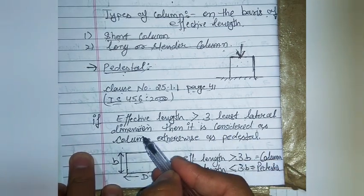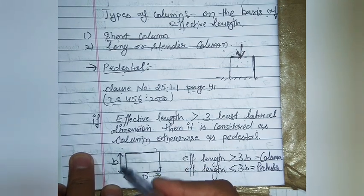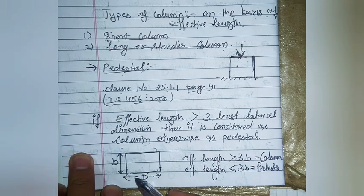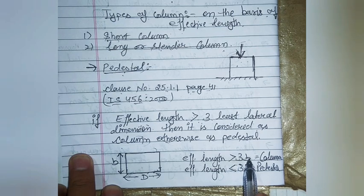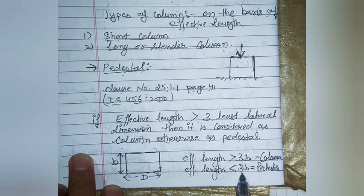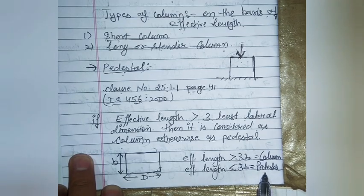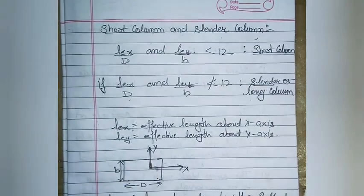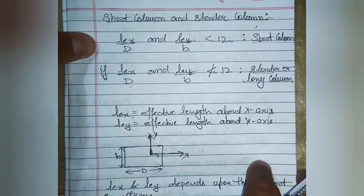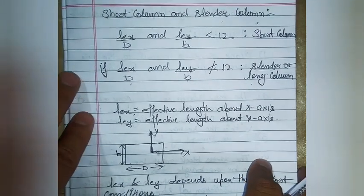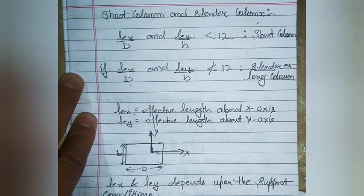If we have a member where the least dimension is B, and the effective length is greater than three times B, it is termed as a column. If the effective length is less than three times B, it is termed as a pedestal. This is how we differentiate column and pedestal as per the Indian Standard code. Columns are of two types — short column and slender (long) column — differentiated on the basis of effective length.